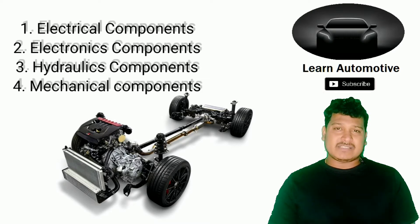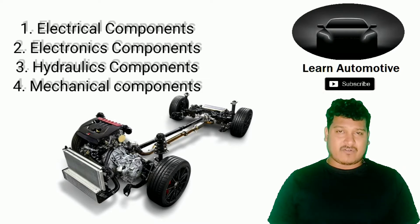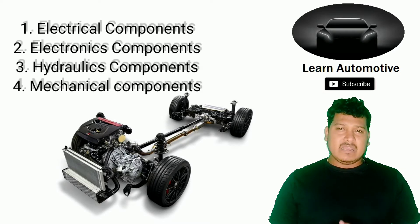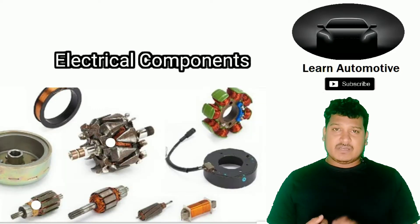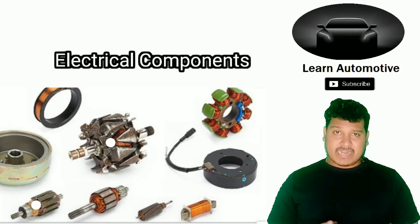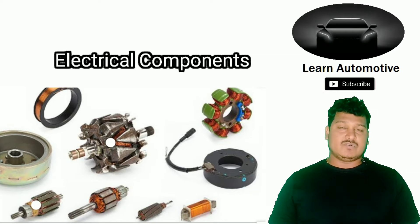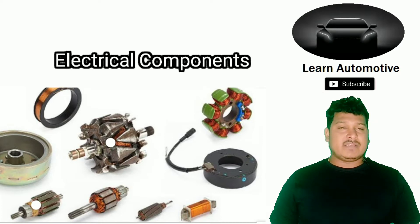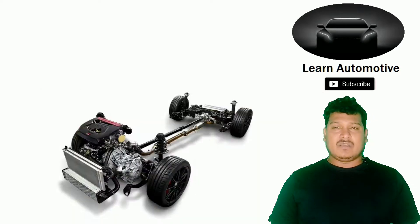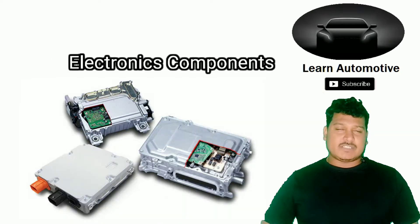Under electrical, we have four major components: the alternator, stator, electrical harness, and the main source — the battery. These are the four components under the electrical category.